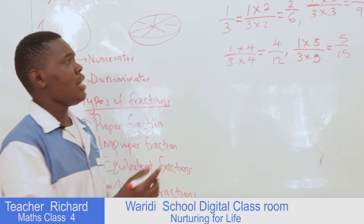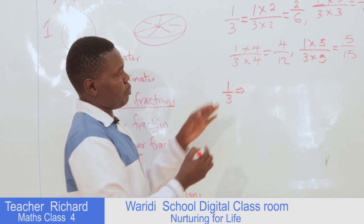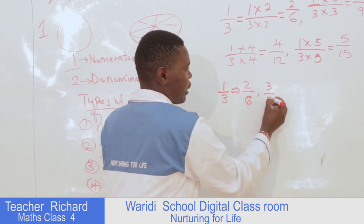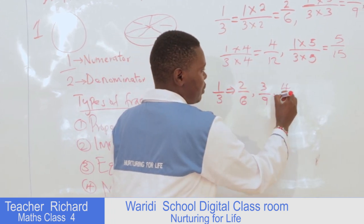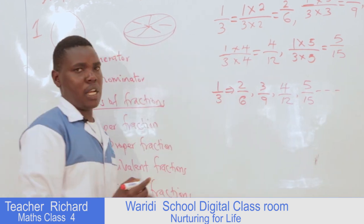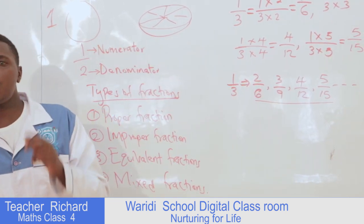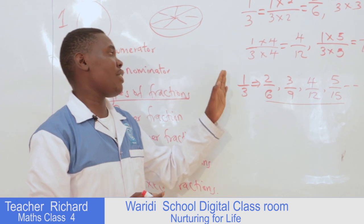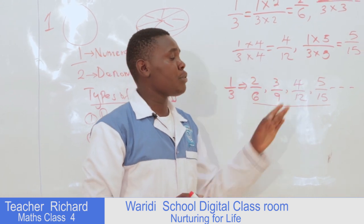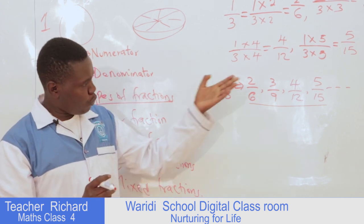So these are the fractions I get after multiplying. I started with one-third, and after multiplying I got two over six, three out of nine, four out of twelve, and five out of fifteen — and the thread continues like that. These fractions are equal to our original fraction, one out of three. So we can say that two over six, three out of nine, four out of twelve, and five out of fifteen are equivalent fractions. When you are at home, please look for others.